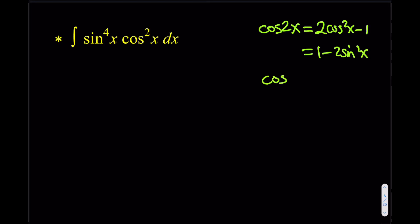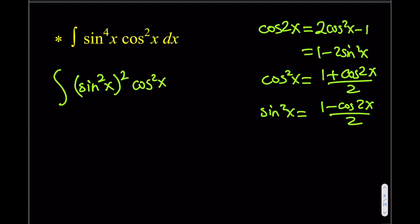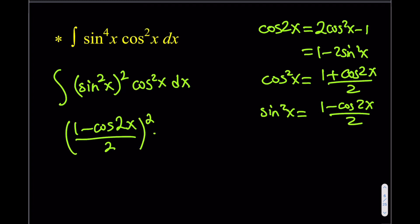This allows us to write cosine squared x as (1 + cos(2x))/2, and sine squared x as (1 minus cos(2x))/2. First, let's write sine to the fourth as (sine squared) squared and keep cosine squared as it is. Then replace sine squared with (1 minus cos(2x))/2, squared, and multiply by cosine squared written as (1 + cos(2x))/2 dx.